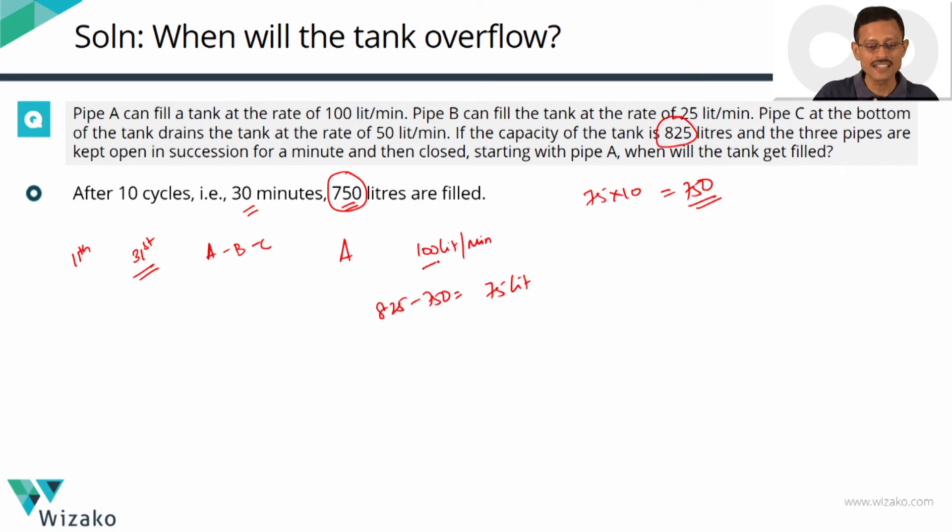So if I fill another 825 minus 750 another 75 liters into the tank the tank will be filled. Pipe A fills 100 liters each minute. Pipe A has to fill only 75. It need not even complete the entire cycle. So to fill 75 liters pipe A is going to take 75 by 100 which is equal to 3 fourths of a minute into the 11th cycle. What is the total time taken? Initially 10 cycles of 30 minutes plus another 3 fourths of a minute. Let's write it in terms of seconds which is equal to 45 seconds. So the entire tank will be filled in 30 minutes and 45 seconds.